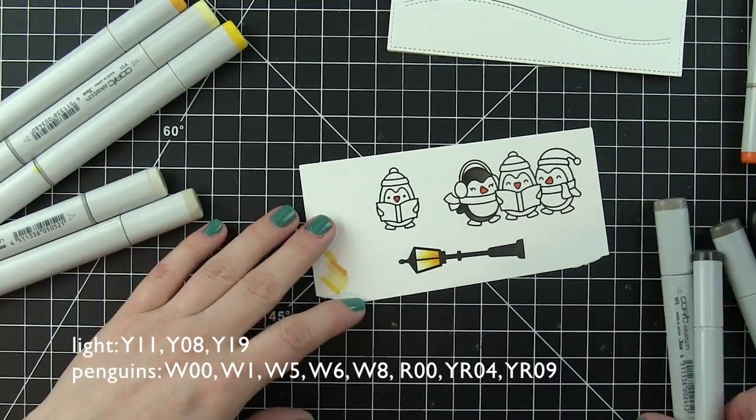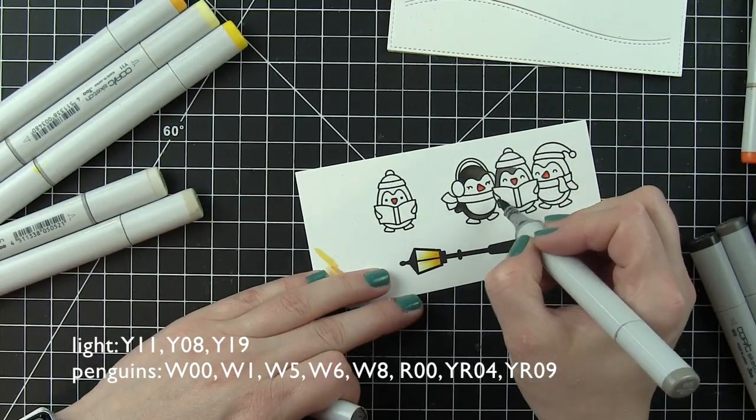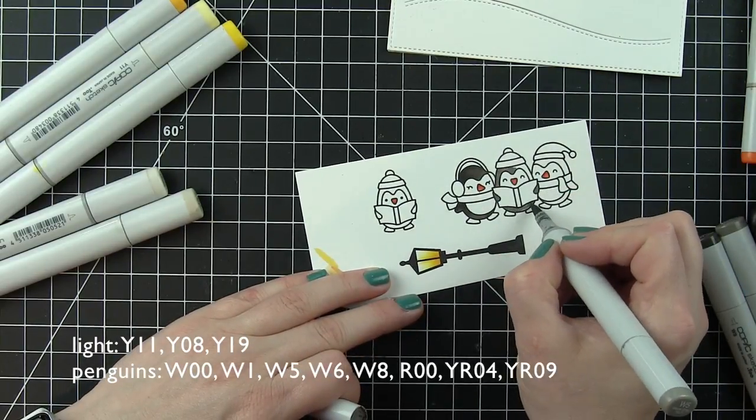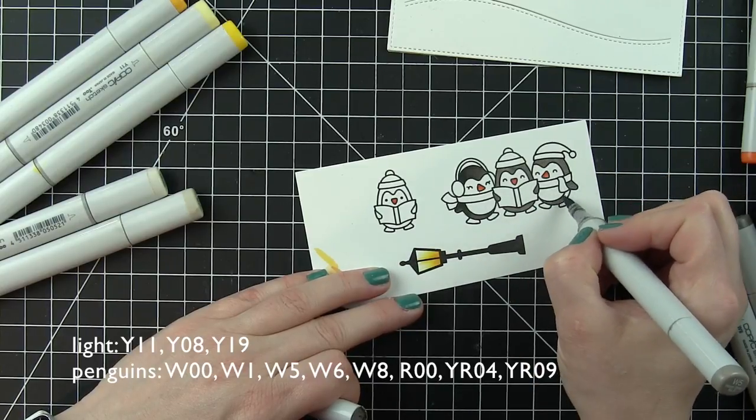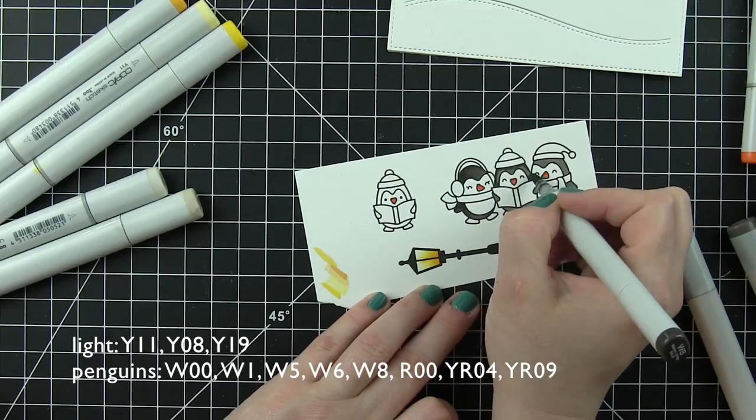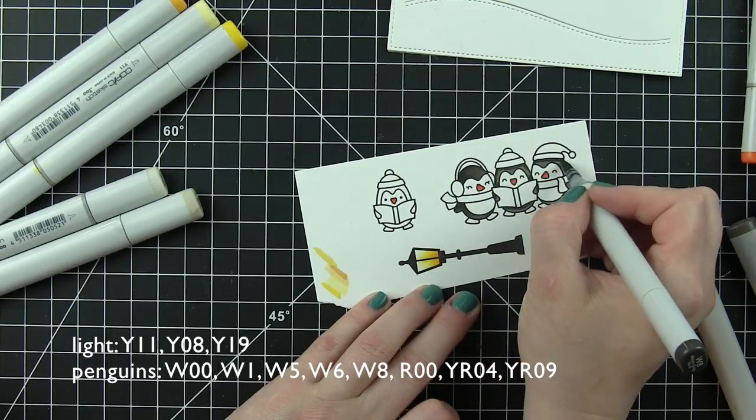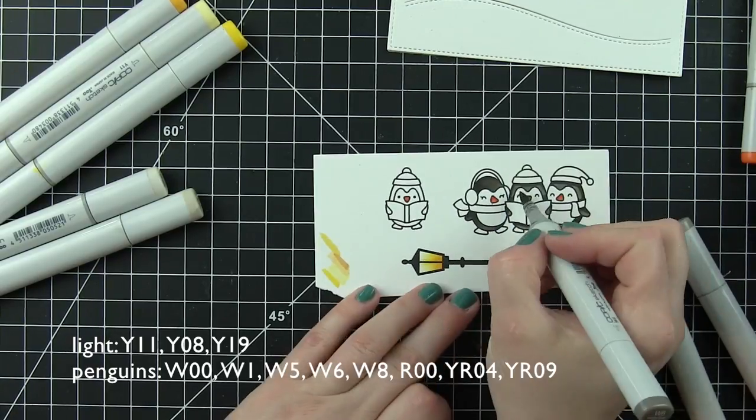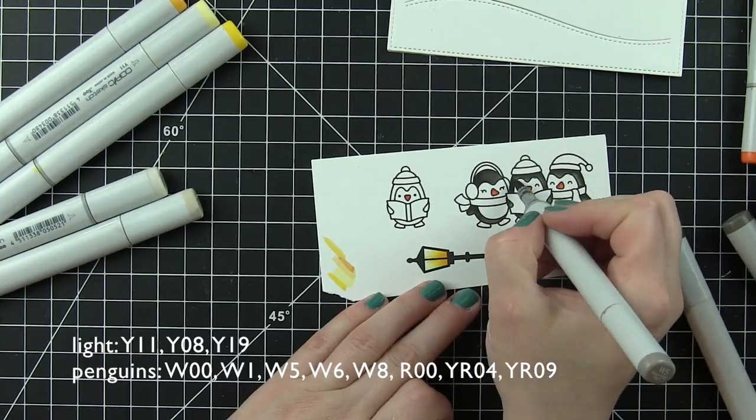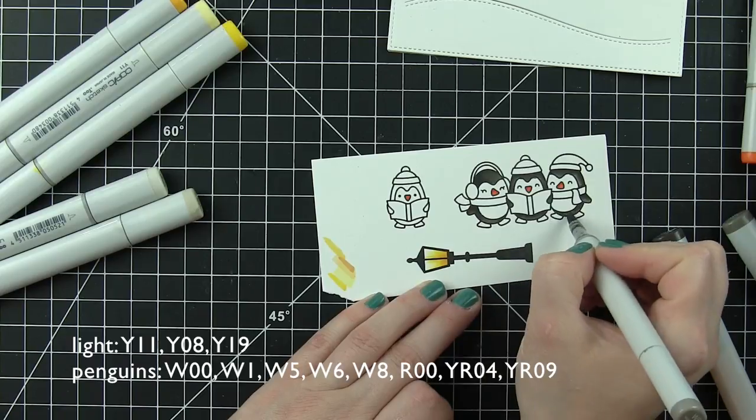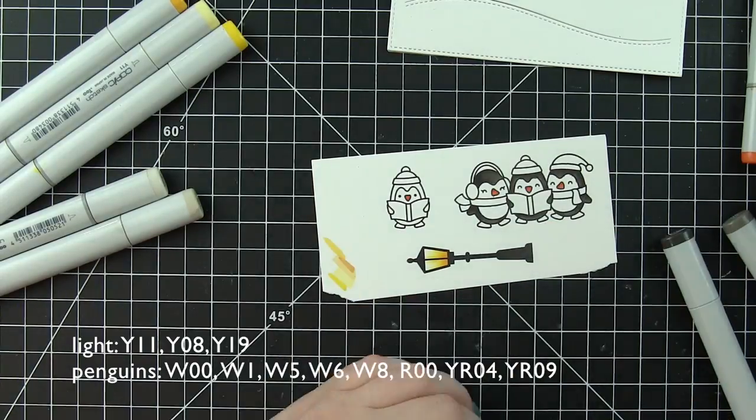Along the bottom of the screen I have listed the Copic colors I'm using for different elements of the design. I stamped the images with Lawn Fawn Jet Black ink. This is an ink that works fantastic for Copic coloring. It's not going to bleed. I started with the light. I wanted it to appear that the light is glowing from kind of the bottom up.